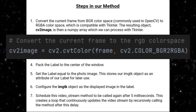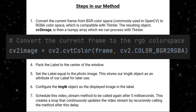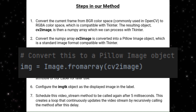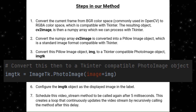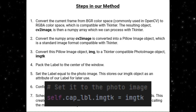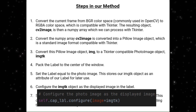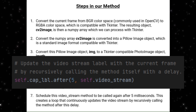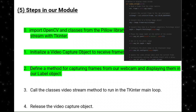To summarize the video_stream method: first, we converted the current frame from the BGR color space used by OpenCV to the RGB color space compatible with TKinter — the resulting CV2 image is a NumPy array. After this, we converted that NumPy array into a Pillow image object, which is the standard image format compatible with TKinter. Then we converted the Pillow image into a TKinter-compatible PhotoImage object using ImageTK. Finally, we handled the TKinter updates — packing the label, setting it equal to the PhotoImage to store the ImageTK object as a label attribute, configuring it as the displayed image, and then using recursion to continuously grab the most current frame and update the label.